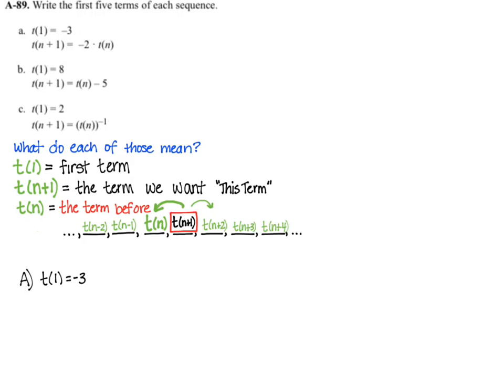So in problem A, it tells you the first term is -3, and then it says the second term would be -2 times the previous term, T(1). So T(2) is equal to -2 times T(1). But we know what T(1) is. It's -3. So we plug it in and we can evaluate T(2).